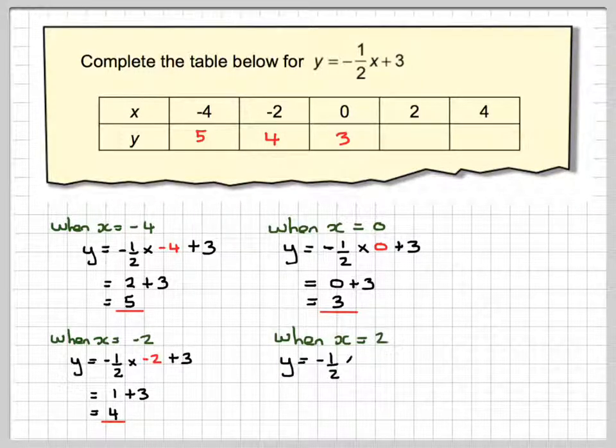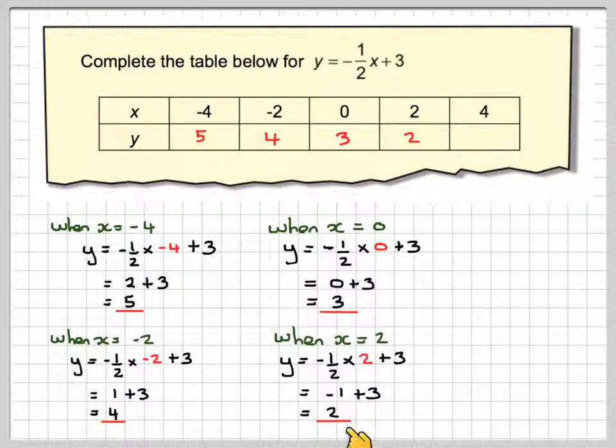When x is equal to 2, we're going to have minus one-half times 2 plus 3. Minus one-half times 2 is 1, but we've got a negative and a positive, so that's going to mean we're going to have minus 1 plus 3. Minus 1 plus 3 makes 2.